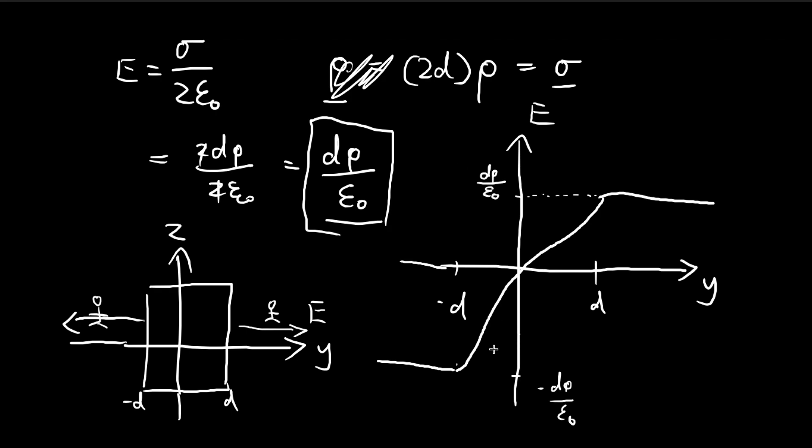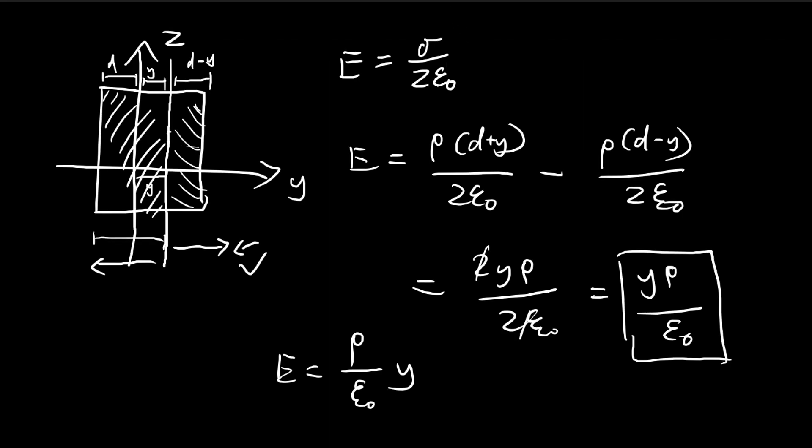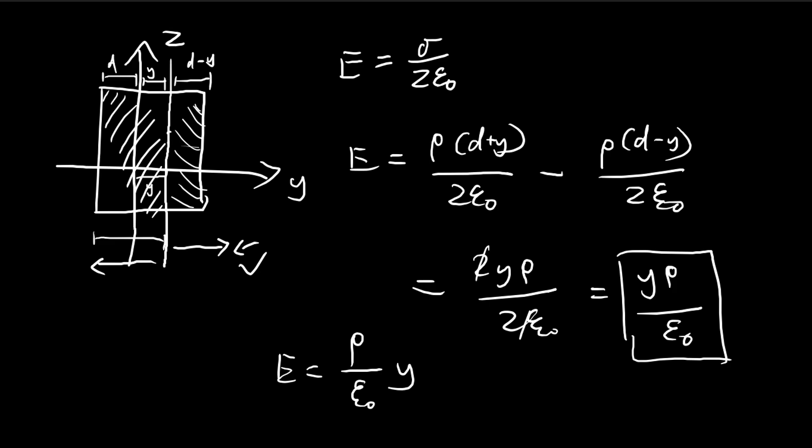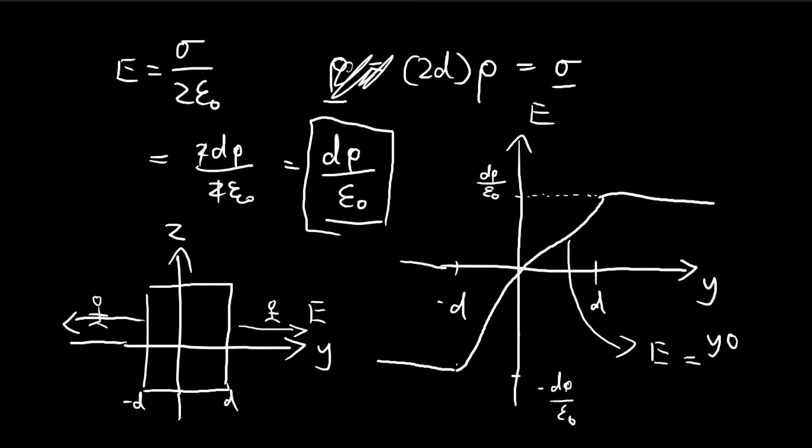So this is a very bad drawing, but this is actually a straight line. So this section over here, this is e equals to y rho divided by epsilon. So that's how you solve this problem.